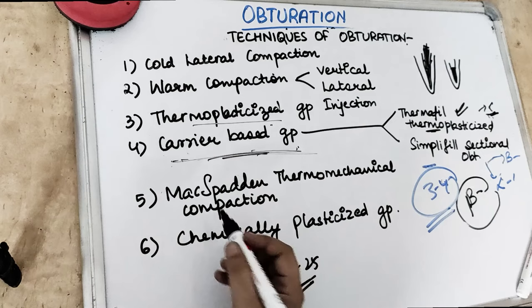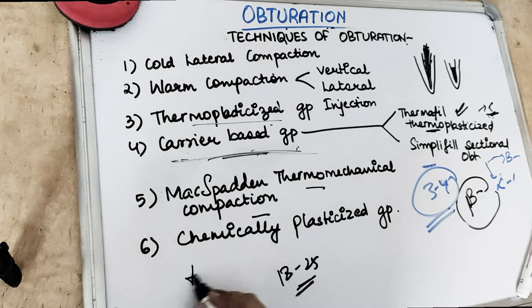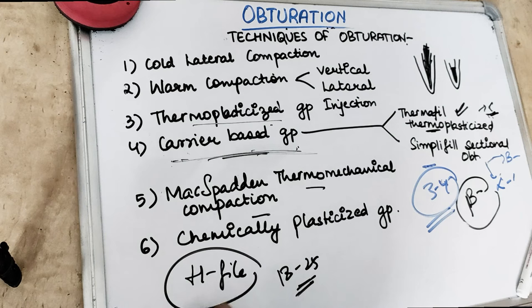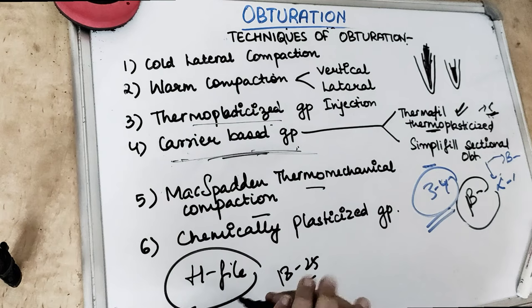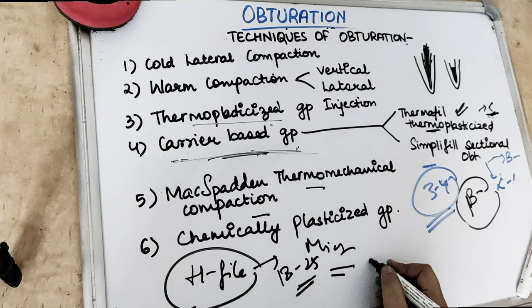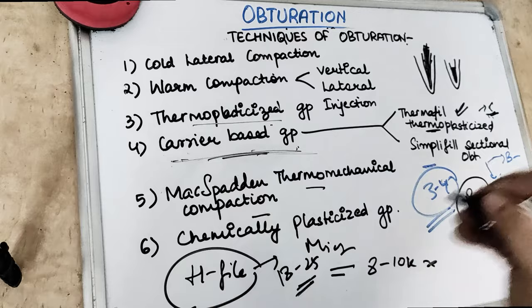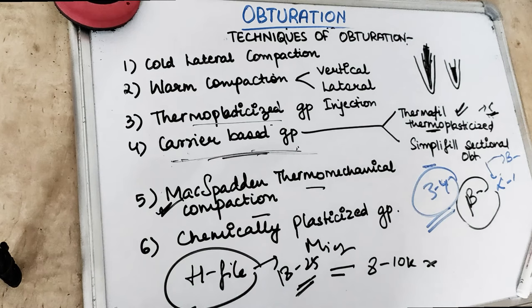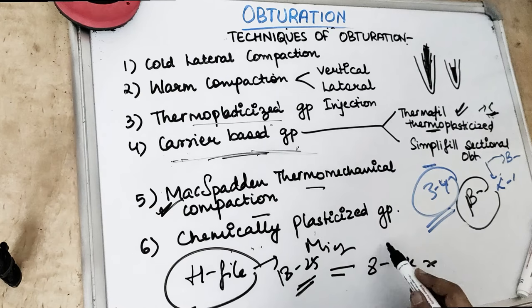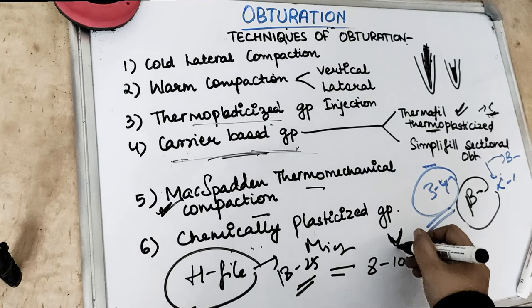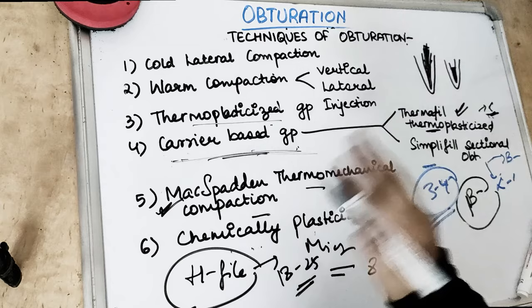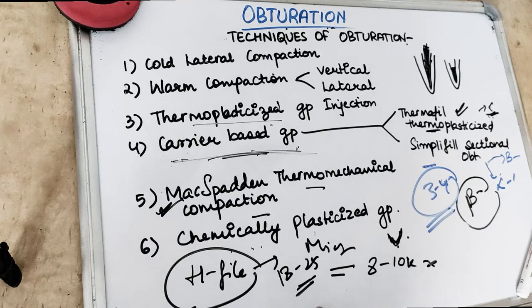McSpadden thermomechanical compaction uses an instrument similar to the H-file but with reversed flutes, attached to a slow-speed contra-angle handpiece (micromotor) at a speed of 8,000 to 10,000 rpm, which creates heat. This compactor forces the softened GP apically as well as laterally. For chemically plasticized GP, the GP is chemically dissolved in solvents like chloroform, xylitol, or eucalyptol. These chemical solvents soften the GP, which is then placed into fine and tortuous canals where no other method can reach.